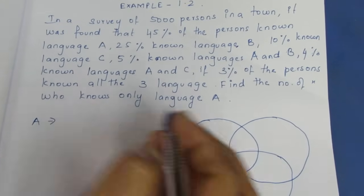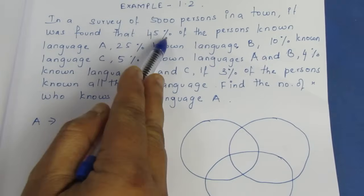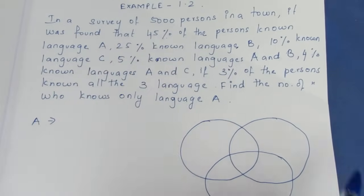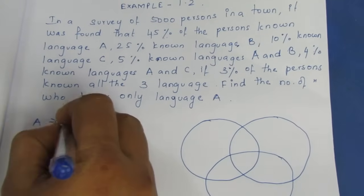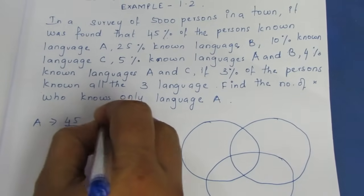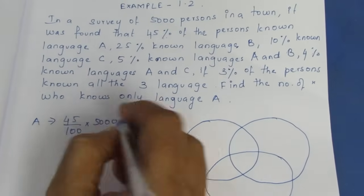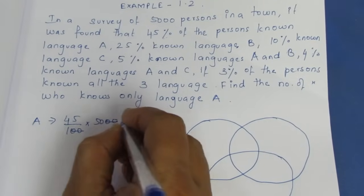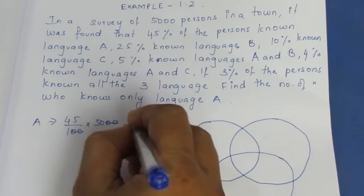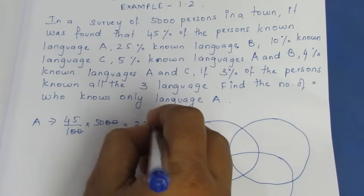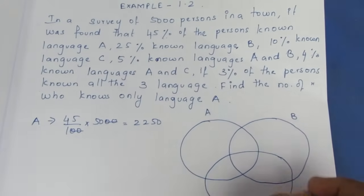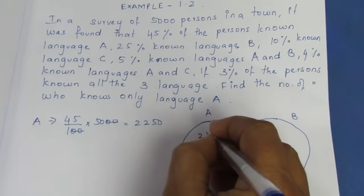A is 45%. 45% of 5000 means 45 divided by 100 into 5000. Cancelling 20 and 20, multiply: 45 multiplied by 50 gives 2250. So A is 2250.